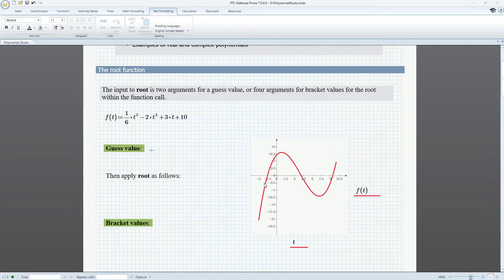Here, we can see that one of the roots of the polynomial is very close to negative one. So let's use that as our guess value. We can now apply the root function as follows, and we can see that the solution closest to our guess value is negative 1.543.